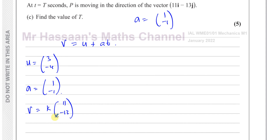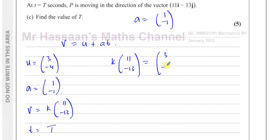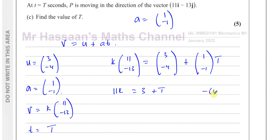The velocity is some multiple of (11, −13) since it's in the same direction but with unknown magnitude. Substituting into v = u + at: k(11, −13) = (3, −4) + (1, −1)t. This gives two equations: 11k = 3 + t (equation 1) and −13k = −4 − t (equation 2).